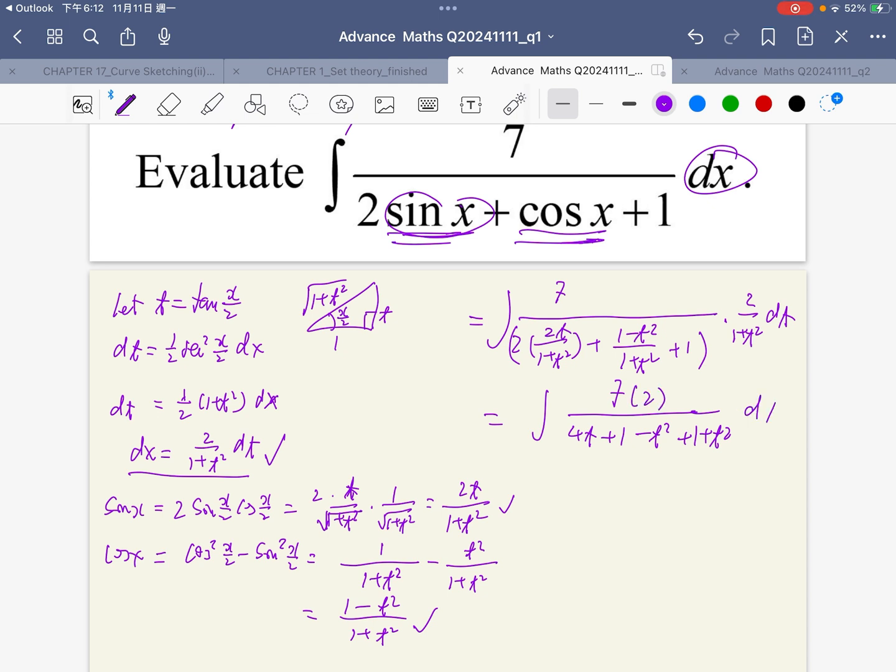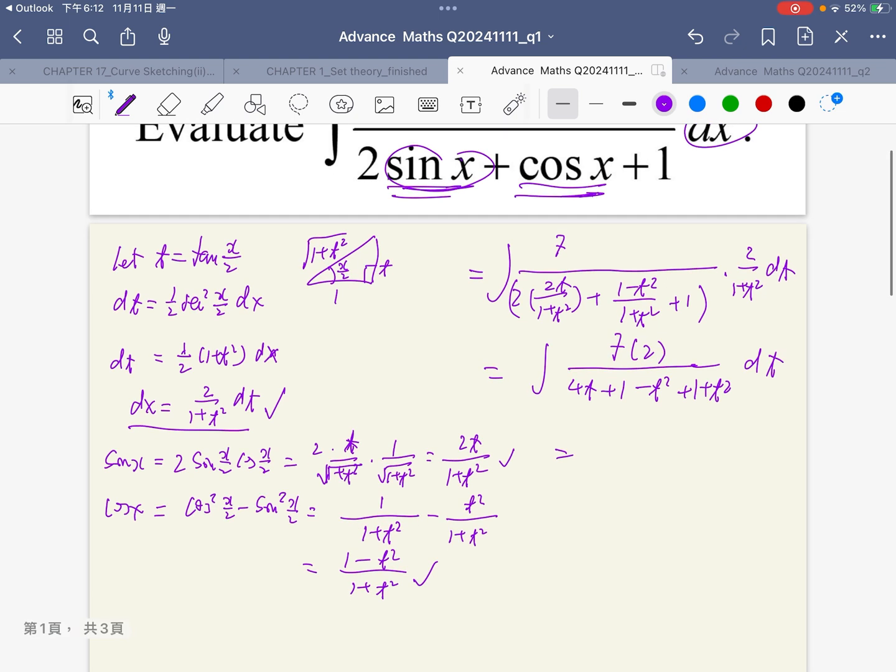The denominator becomes 4t plus 2. Cancel the 2 to get 7 over 2t plus 1 dt.